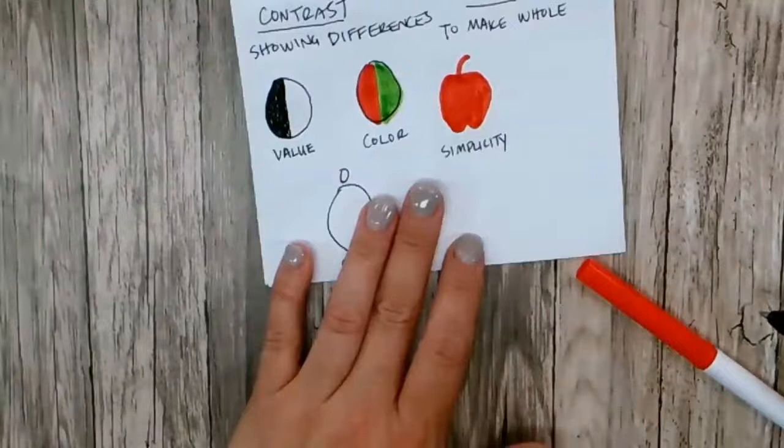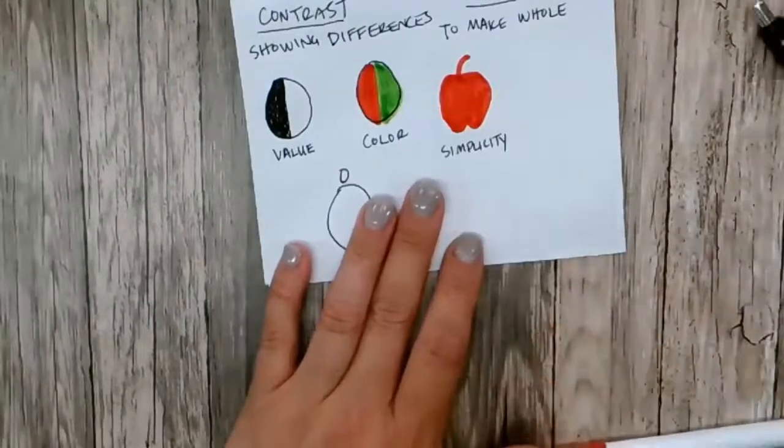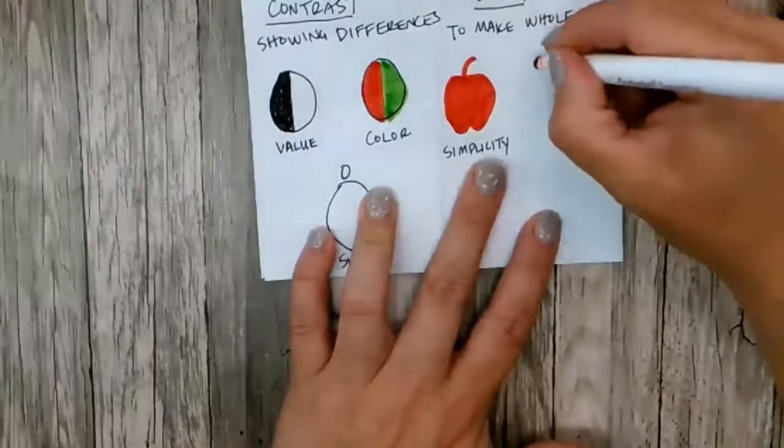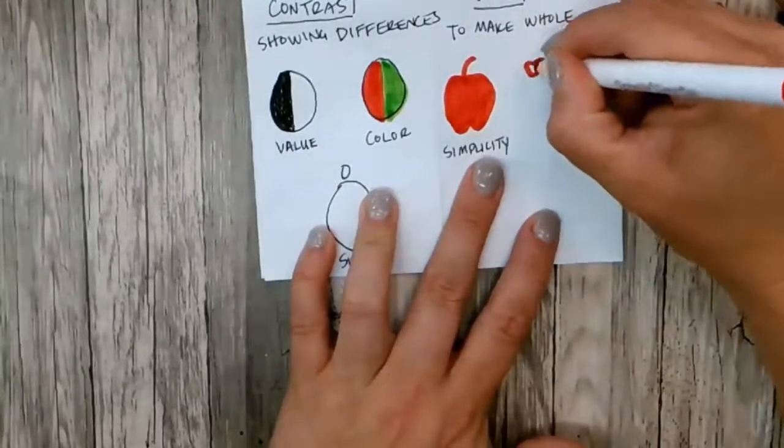We can use something called repetition, which is like rhythm. So I could have a whole bunch of apples.